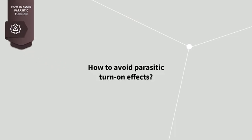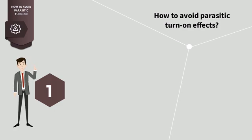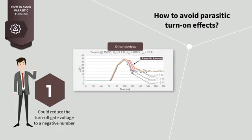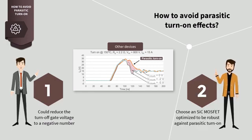Luckily, we have two methods to avoid this. In method one, you could reduce the turn-off gate voltage to a negative number, not zero-volt turn-off. This is the most common approach. In method two, choose a SiC MOSFET that is optimized to be robust against parasitic turn-on.